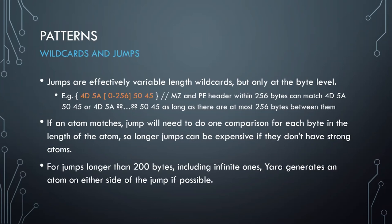This generates effectively two atoms — one for '4D5A' and one for '5045' — on either side of the jump. When it matches, it has to do a comparison for each possible length of that wildcard — in this case 257 potential comparisons each time it hits one of the atoms. If you do a longer jump, it can be very expensive, especially if the atoms are weak — two-byte atoms are going to be problematic.